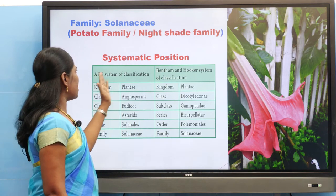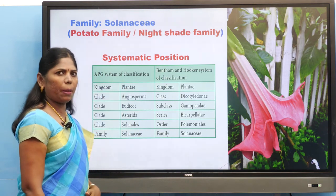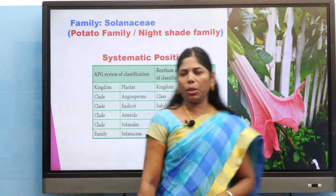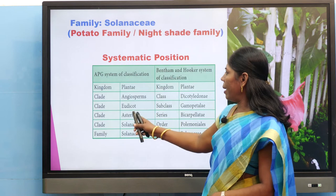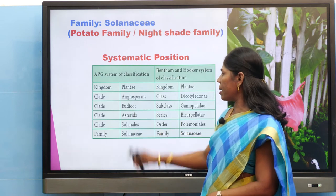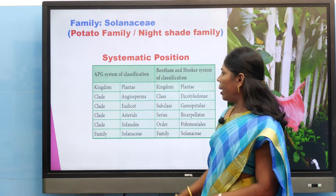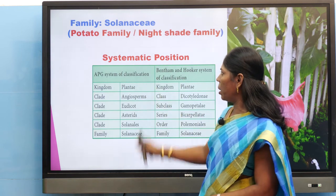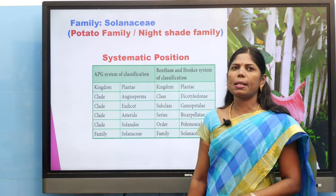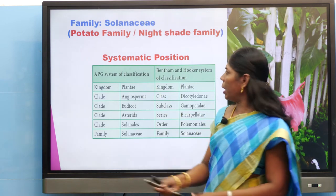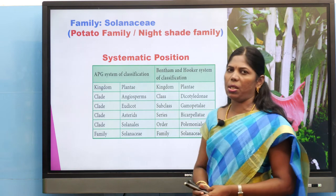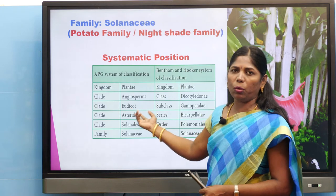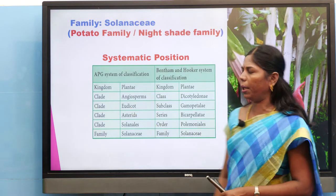In the APG system of classification, the kingdom is Plantae, clade is Angiosperm, another clade is Eudicot, clade is Asterids, order is Solanales, and family is Solanaceae. This is the systematic position of Solanaceae — it may be asked as a one, two, or three mark question.